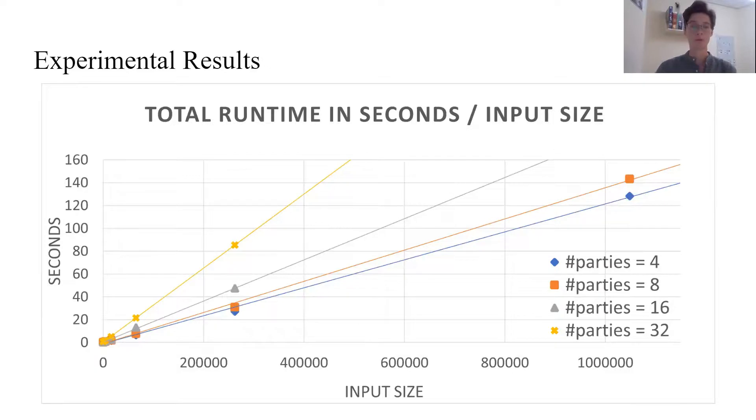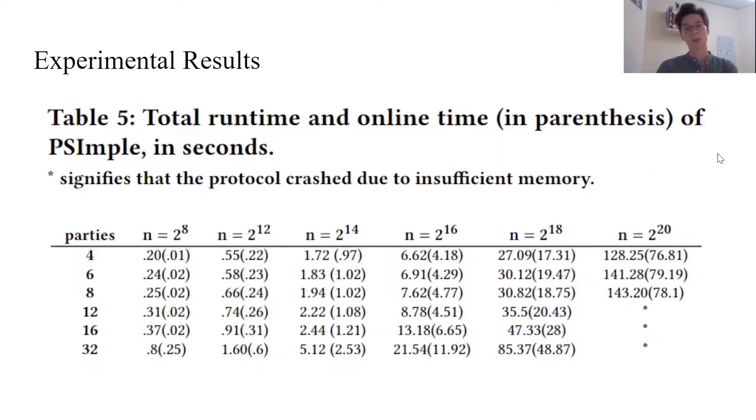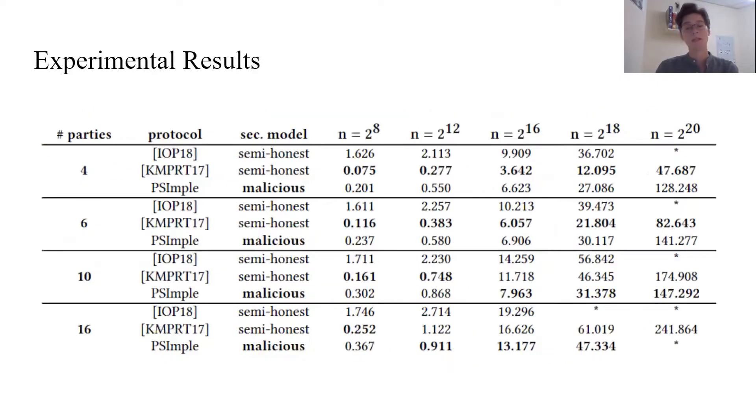We implemented our protocol, incorporated several code optimizations, and run extensive experiments with up to 32 parties and 2 to the 20 inputs. We separated the protocol into offline and online phases. With the sizes of input up to 2 to the 12, the online phase is significantly smaller than the offline one. With big input sizes, it's about half of the overall running time due to the massive computation of GBFs for big sets. PSImple is competitive even with the previously known semi-honest MPSI protocols. Details of the implementation, experiments and comparison can be found in our article.